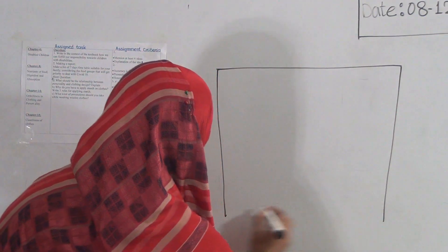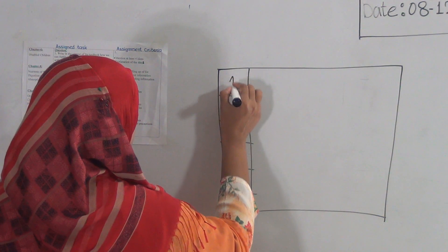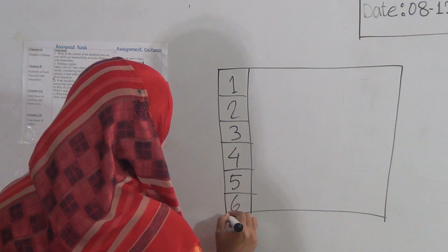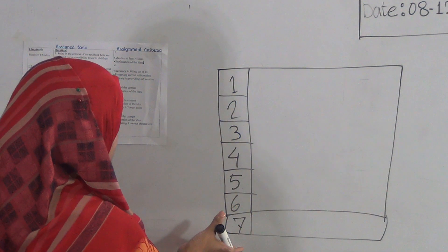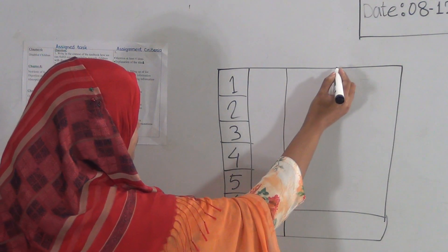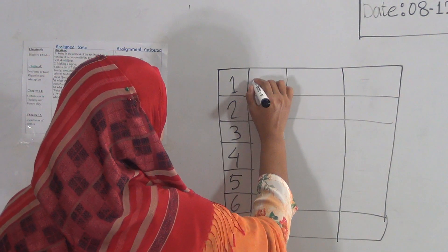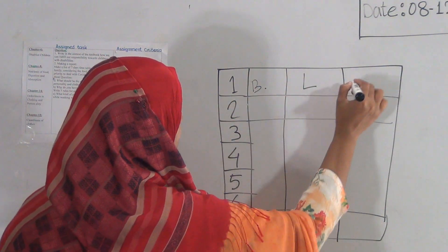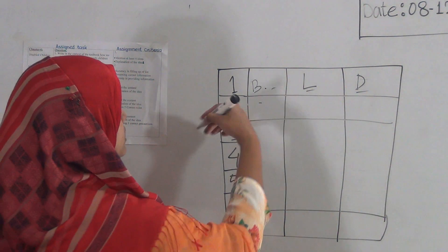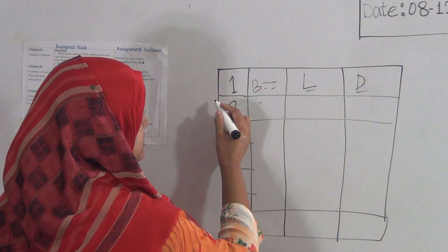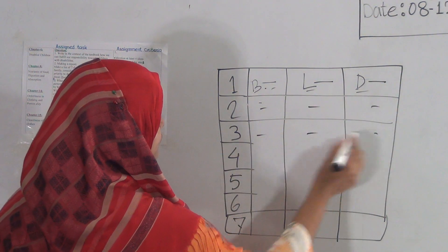I'm drawing a chart here. You have to mention the names of the seven days — one, two, three, four, five, six, seven — so you can write Saturday, Sunday, Monday, Tuesday, and so on. Here you provide information for each day: breakfast, lunch, and dinner. You write what your family will take for breakfast on Saturday, what for lunch, and what for dinner.